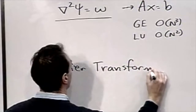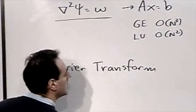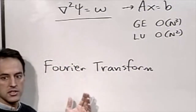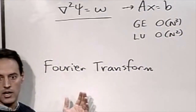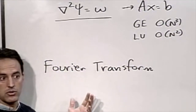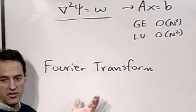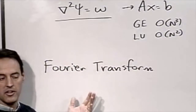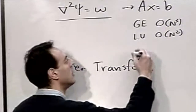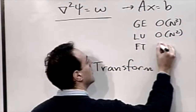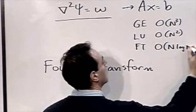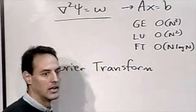We're going to talk about the Fourier transform in the context of this problem now, and then develop the idea further in a couple of weeks when we discuss spectral methods. Spectral methods are very fast and efficient — the Fourier transform gives us O(n log n).